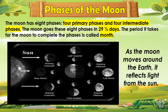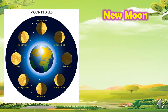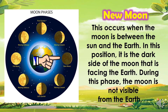As the moon moves around the Earth, it reflects light from the sun. The first phase is the new moon. This occurs when the moon is between the sun and the Earth. In this position, it is the dark side of the moon that is facing the Earth. During this phase, the moon is not visible from the Earth.